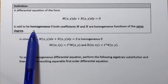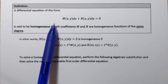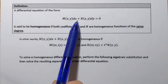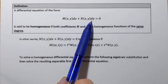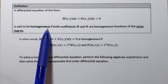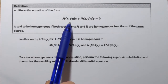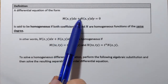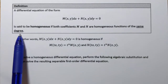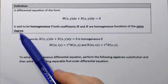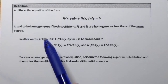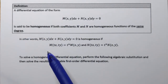Here is the definition. A differential equation of the form M of x,y dx plus N of x,y dy equals 0 is said to be homogeneous if both coefficients M and N are homogeneous functions of the same degree. We talked about homogeneous functions in the previous video, so most of what we're going to be talking about right now should make sense.